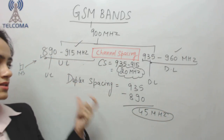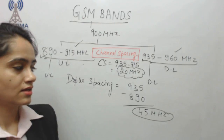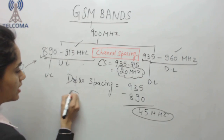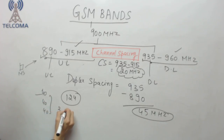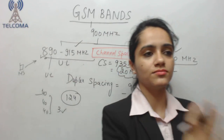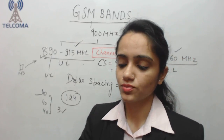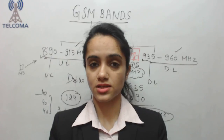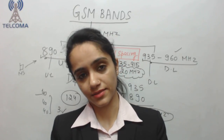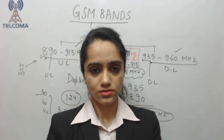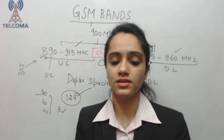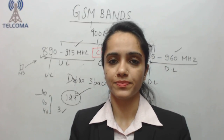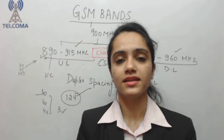Since we only have 124 ARFCNs in this band, if companies purchase 40 ARFCNs each, only about three operators can work in this band and others must move to another band. When purchasing spectrum, it is done on a first-come-first-served basis or through a bidding method, depending on the country. Operators purchase ARFCN numbers and then operate on them. This concludes the GSM 900 MHz band discussion.